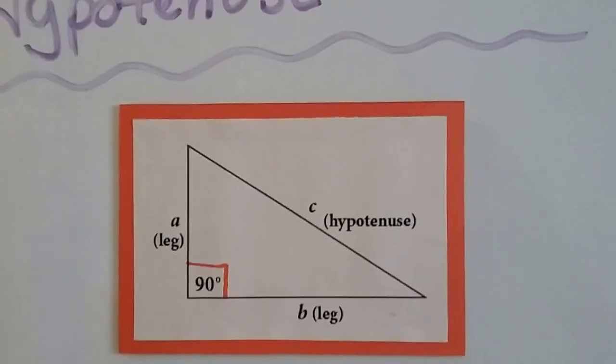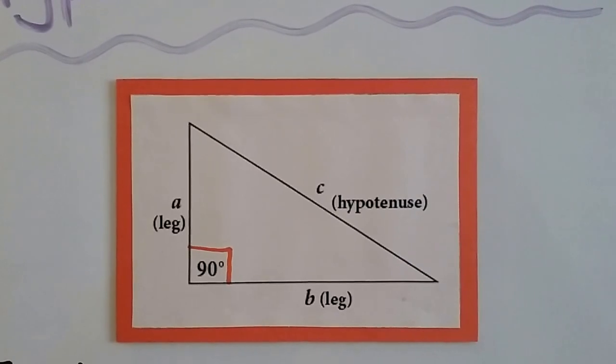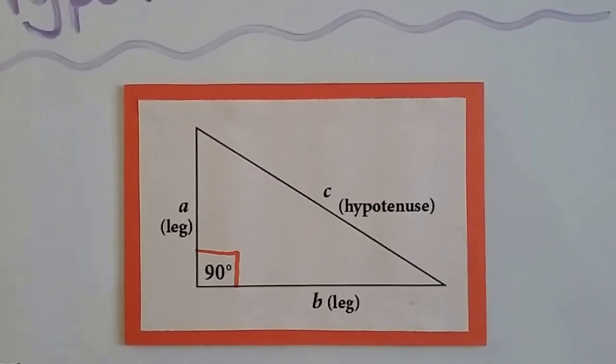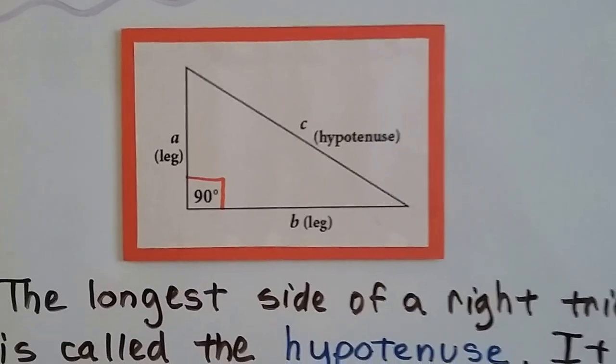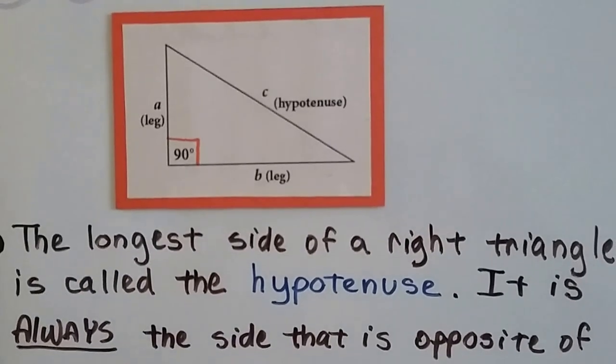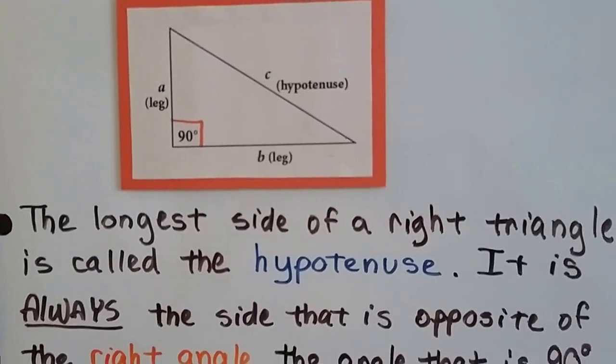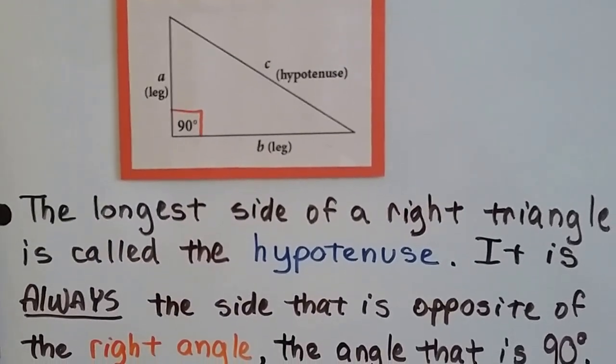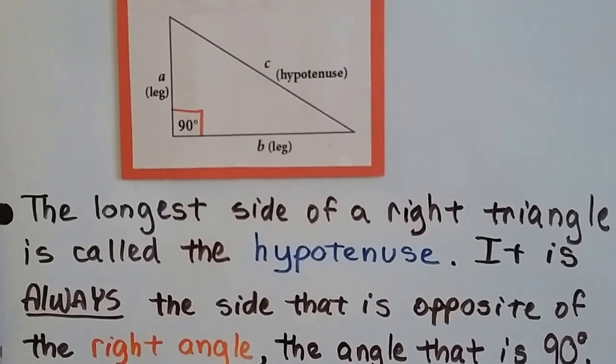Let's take a look at this picture here. You can see the long side of a right triangle is the hypotenuse, and the other two sides are legs. So the longest side of a right triangle is called the hypotenuse, and it's always the side that's opposite of the right angle, the angle that's 90 degrees.